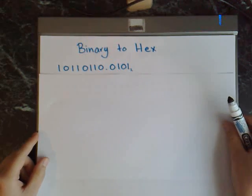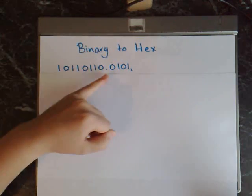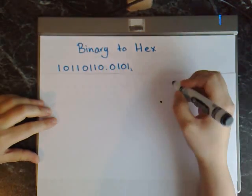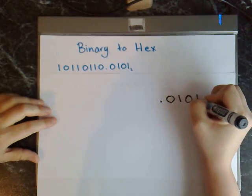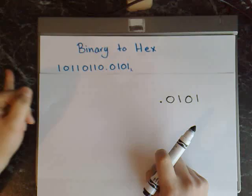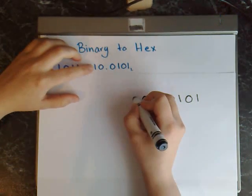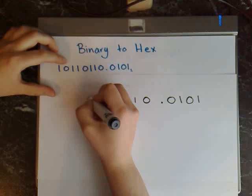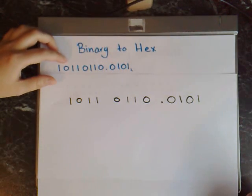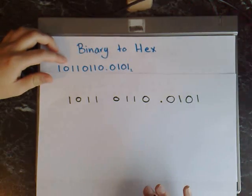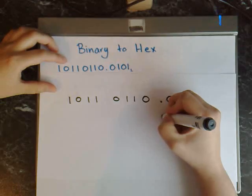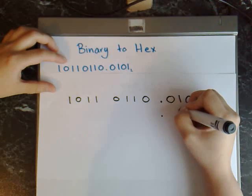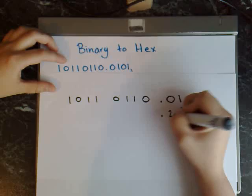To get started, what you need to do is write out the binary number into groups of 4 digits. Start at the decimal place — I'll just do the right side first, so that's 0 1 0 1 — and now we'll work from the decimal outwards, so it gives us 0 1 1 0 1 1 0 1. Now what we need to do is write 2 to a power beneath each one: 2 to the power of 0, 2 to the power of 1, 2 to the power of 2, and 2 to the power of 3.